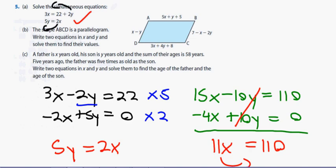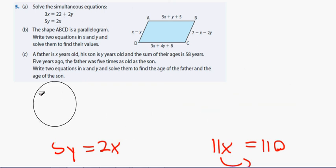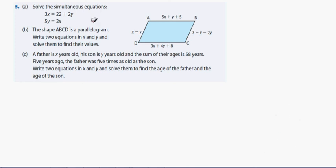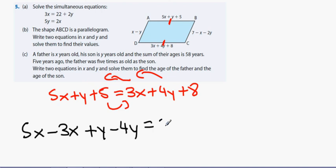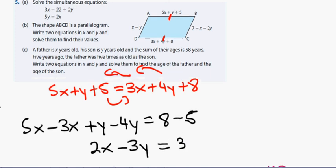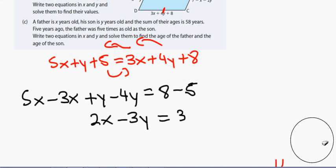Question 5b: ABCD is a parallelogram. Opposite sides are equal, so 5x plus y plus 5 equals 3x plus 4y plus 8. Bringing terms together: 5x minus 3x plus y minus 4y equals 8 minus 5, giving 2x minus 3y equals 3.